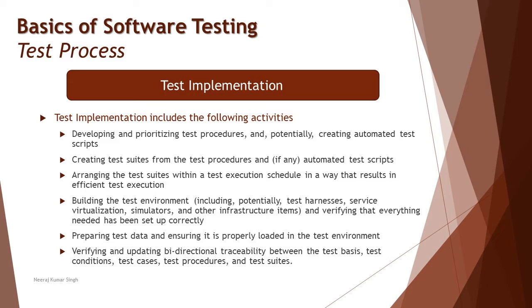That's how prioritization can help at any point of time, and we start doing that as part of test implementation. The next thing is creating a test suite out of test procedures and automated tests. A test suite is basically a collection of test cases — the test procedures — and it helps us prepare which test cases can be executed together. You can always put similar behaving test cases together so they can be run at the same time, combining them under a test set.